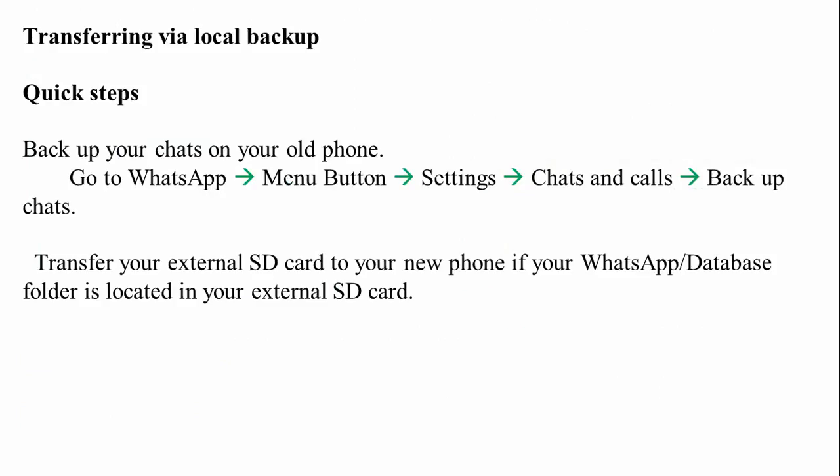For transferring via local backup, the quick steps are as follows. First, take a backup of your chat. Go to WhatsApp, tap the menu button, go to Settings, then go to Chats, and find the backup option. Then transfer your external SD card to your new phone if your WhatsApp database folder is located on your external SD card.